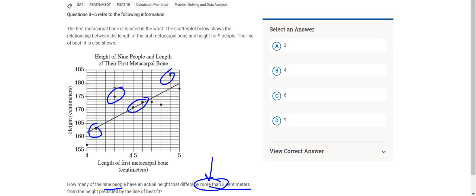Right? The predicted value for this guy was right down here on the line, like at 167. And obviously he's at 175. So he differs by more than three. But it doesn't mean it has to be greater than, because there's another guy right there and another person right there below the line.